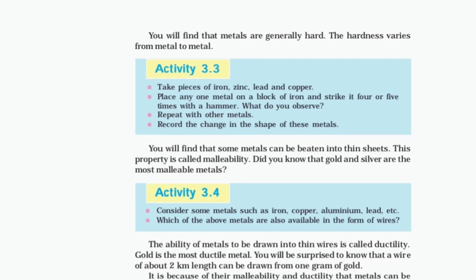Activity 3.3: Take pieces of iron, zinc, lead and copper. Place any one metal on a block of iron and strike it four or five times with a hammer. What do you observe? Repeat with other metals. Record the change in the shape of these metals. You will find that some metals can be beaten into thin sheets. This property is called malleability.